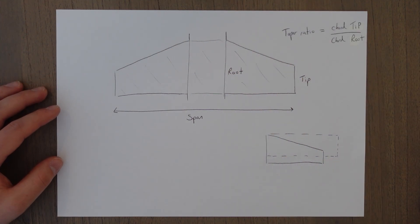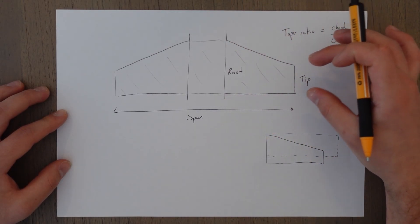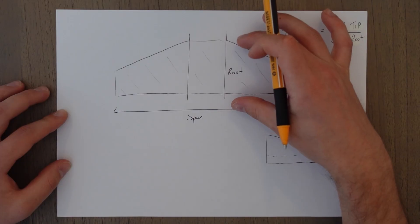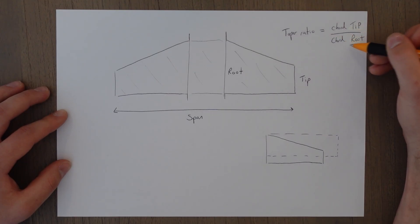The taper of a wing is this property of it narrowing towards the tip because the chord length is shorter at the tip than it is at the root. From the taper we can devise a taper ratio, which is the ratio of the chord tip to the chord root, how much it narrows.